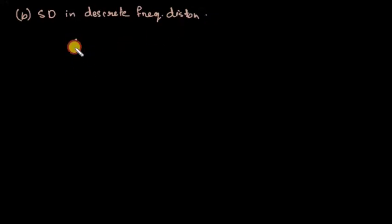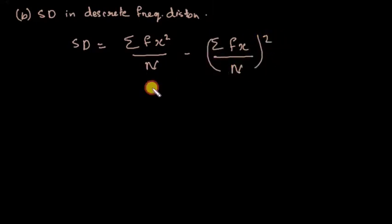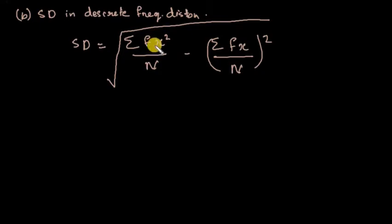Next, we discuss standard deviation in discrete frequency distribution. The formula is: sigma equals the square root of (sigma f x² divided by N) minus (sigma f x divided by N) all squared.